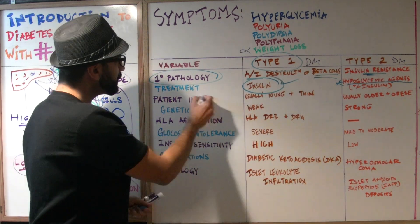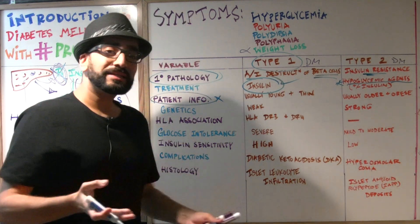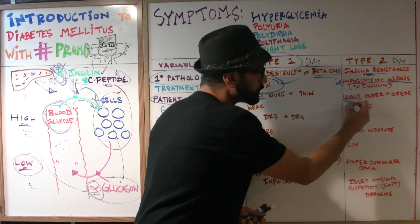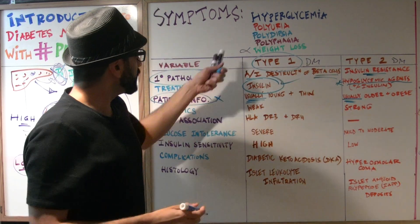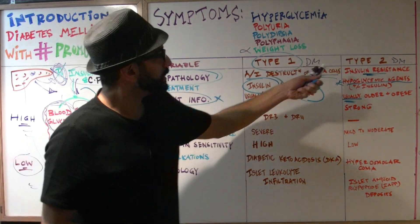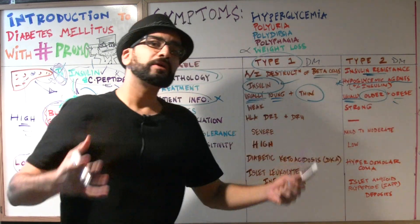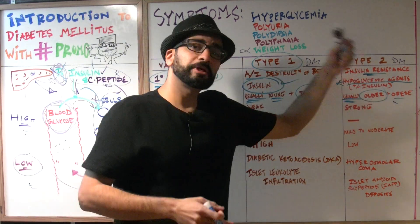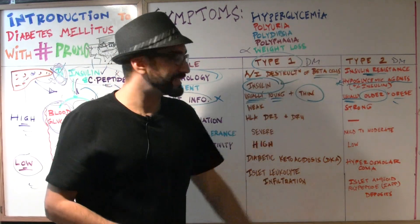Patient information is very important — these are clues in your question stems. Note that I wrote 'usually' here, meaning most of the time but not all of the time. In type 1 diabetes we expect a young, relatively thin patient. In type 2 diabetes we usually expect an older, relatively obese patient. But type 1 could occur in an older obese patient and type 2 could occur in a younger thin patient. These are just generalizations.